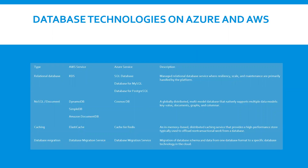Let's talk about database technologies on Azure and AWS. Microsoft Azure provides several different relational database services equivalent to the AWS Relational Database Service. Microsoft Azure offers SQL Database, Azure Database for MySQL, and Azure Database for PostgreSQL. It also supports other database engines such as SQL Server, Oracle, and MySQL, which can be deployed using Azure virtual machine instances.